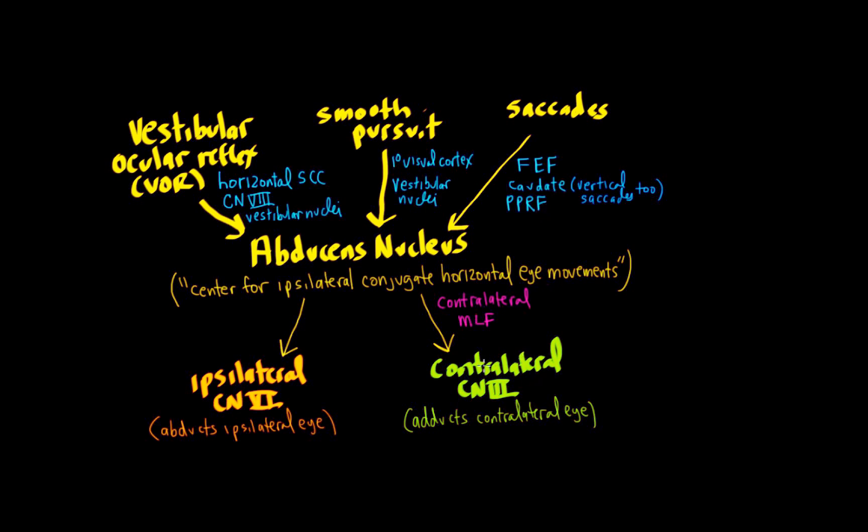So what we're going to do in the next video is we're going to put lesions in different parts of the system and we're going to see what happens if we take out some of these cranial nerves, the MLF, the abducens, and some of these other structures. And we're going to build on this to localize lesions. That concludes this video on the pathways for horizontal VOR, smooth pursuit, and horizontal saccades.